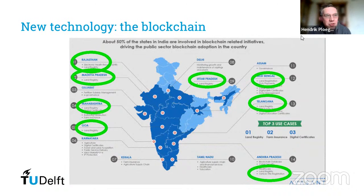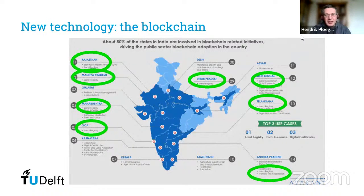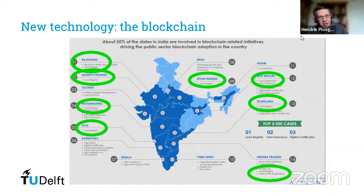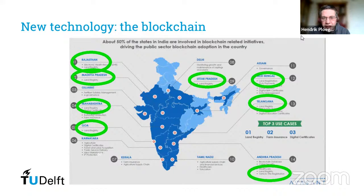The new technology is the blockchain — I will also deal with this in lecture five. I suppose you have heard about it — computers are calculating all the time whether something is wrong or right, whether A is the owner or B is the owner. This is something from the private sector. And an interesting picture from India shows that in nearly 50% of the states in India, they are working on introducing blockchain for land registration.